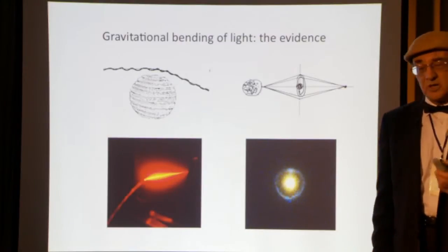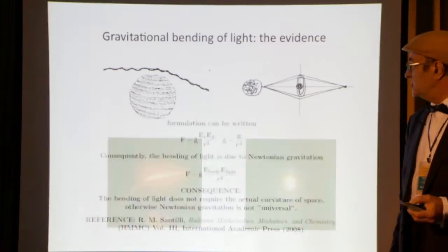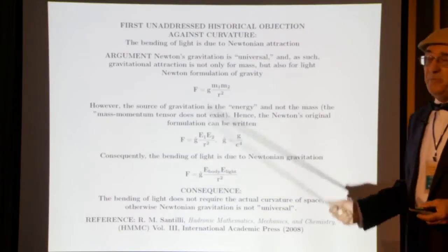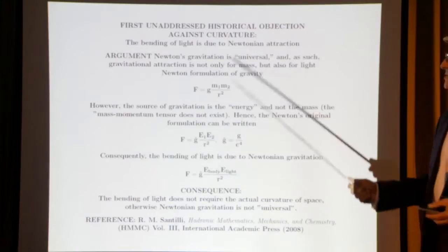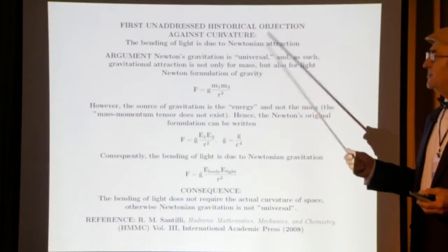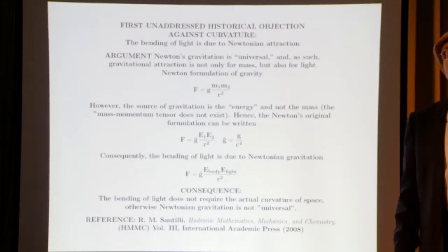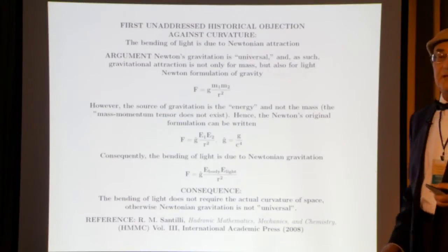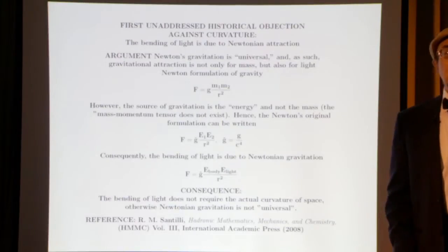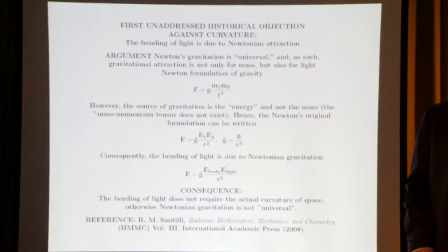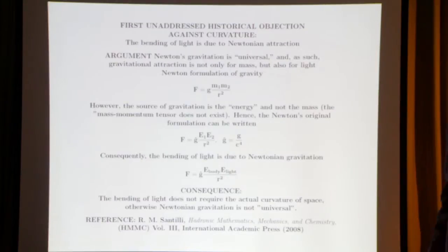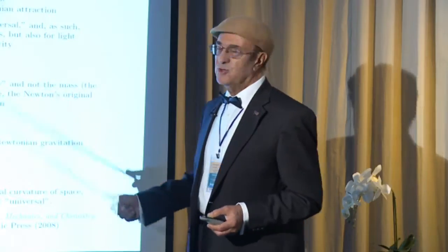What are the historical objections that are unresolved? The first historical objection is that the bending of light is entirely of Newtonian character, to such an extent that there is no need whatsoever of introducing curvature for the representation of the bending of light. The argument is essentially the following.